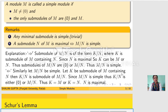Next are a few trivial observations. First, any minimal submodule of M is simple. Suppose N is a minimal submodule of M. We want to prove that N is simple. Let P be any submodule of N. Since N is a minimal submodule, P has only two choices: 0 and N. Thus N has only two submodules, 0 and N, so N is simple.